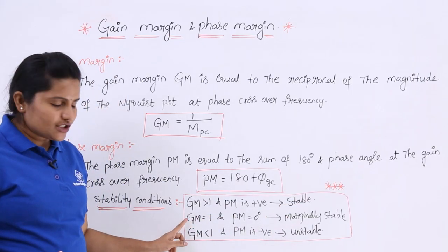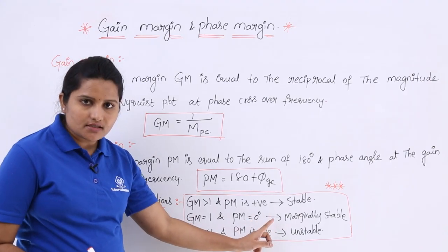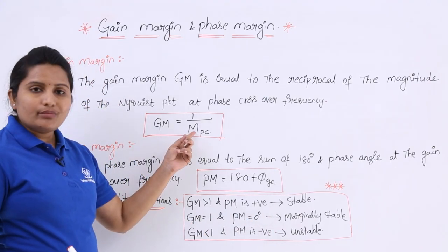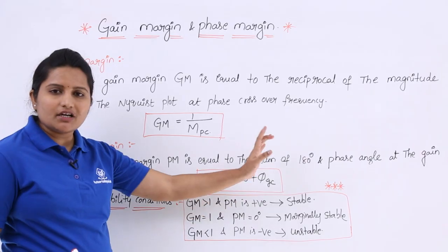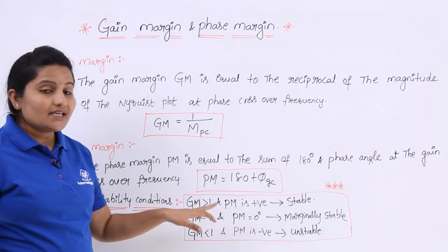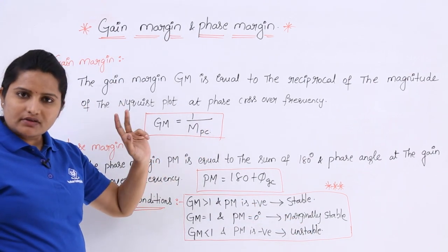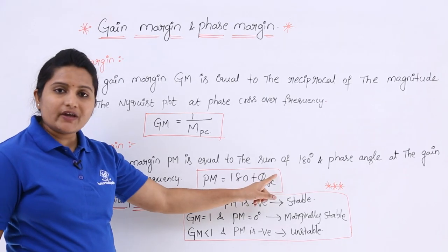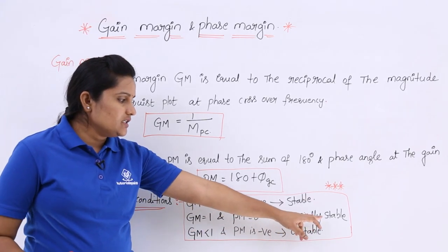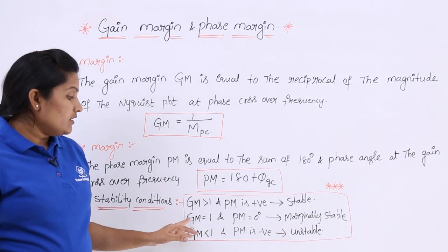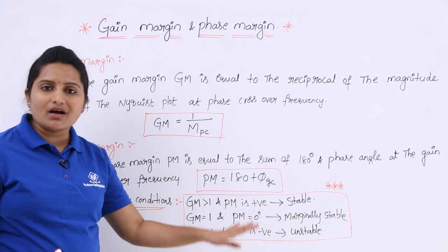The second condition: if gain margin is equal to 1 and phase margin is equal to 0 degrees, that means the magnitude at phase crossover frequency is equal to 1 and the phase at gain crossover frequency is equal to minus 180 degrees. In this case the system is said to be marginally stable. When GM = 1 and PM = 0 degrees, the system is marginally stable.